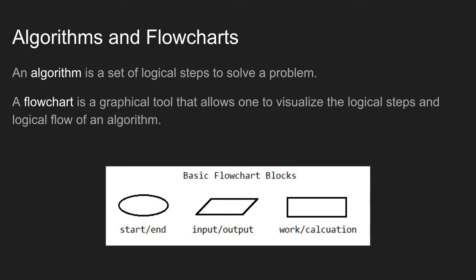Some of the basic flowchart blocks that we know how to implement so far are as follows. An oval represents the start or end of an algorithm. The parallelogram represents an input or an output—how do I get data in and data out? And then finally, a rectangle represents some type of work or calculation being done. Now there are other basic flowchart blocks, but these are the ones that we know how to implement so far.